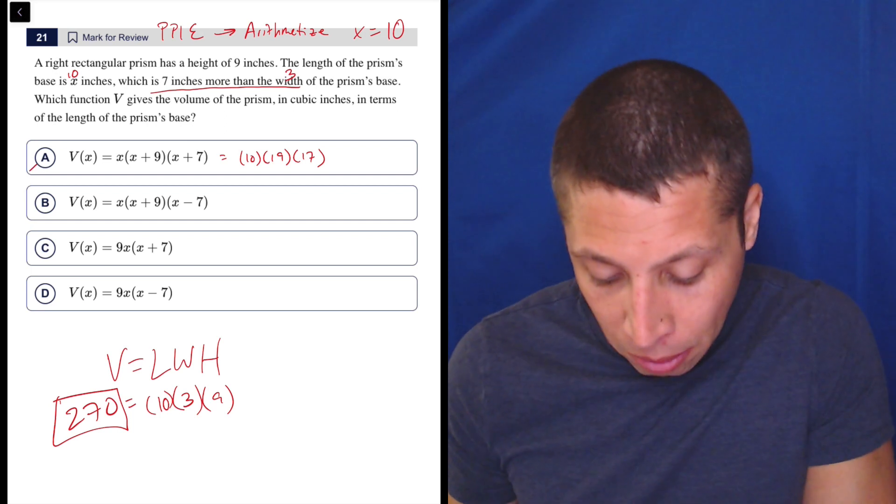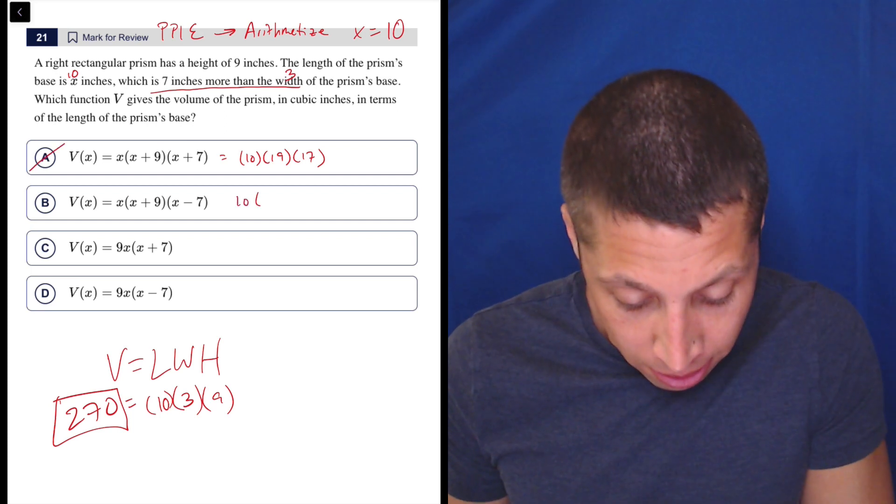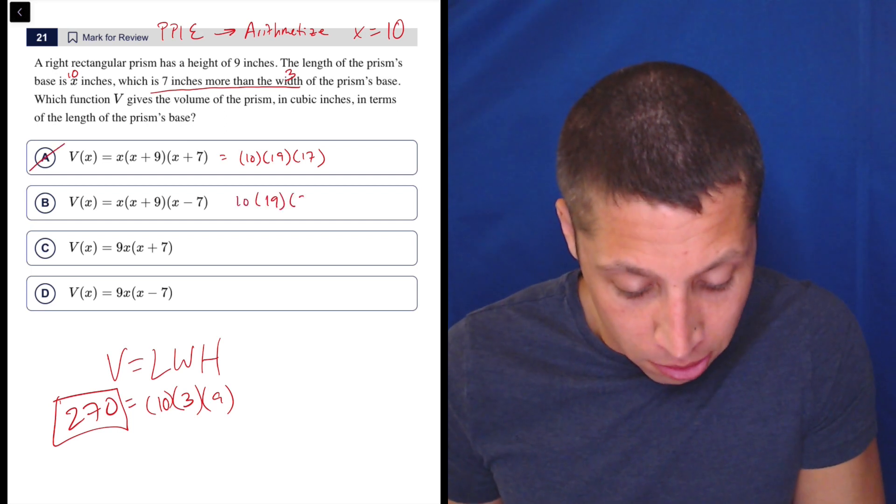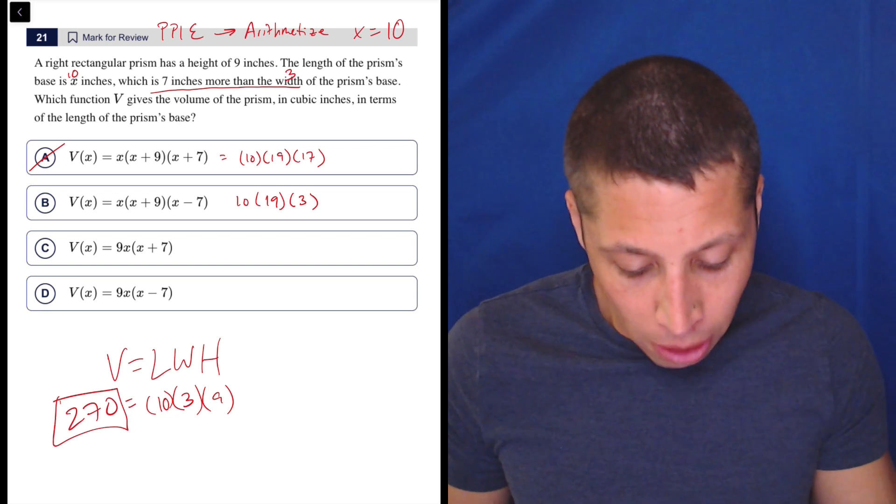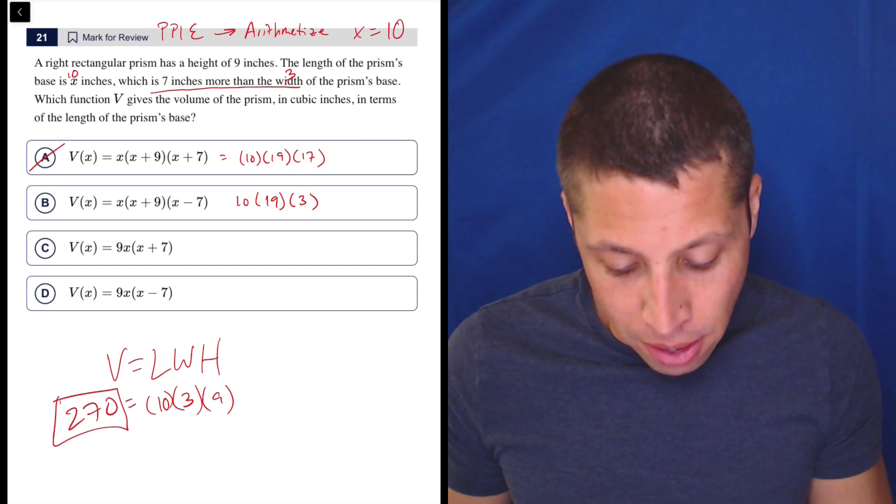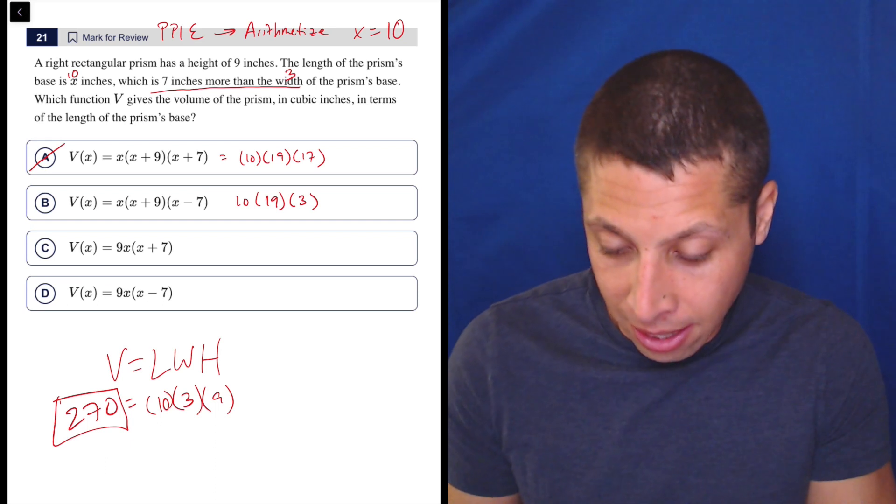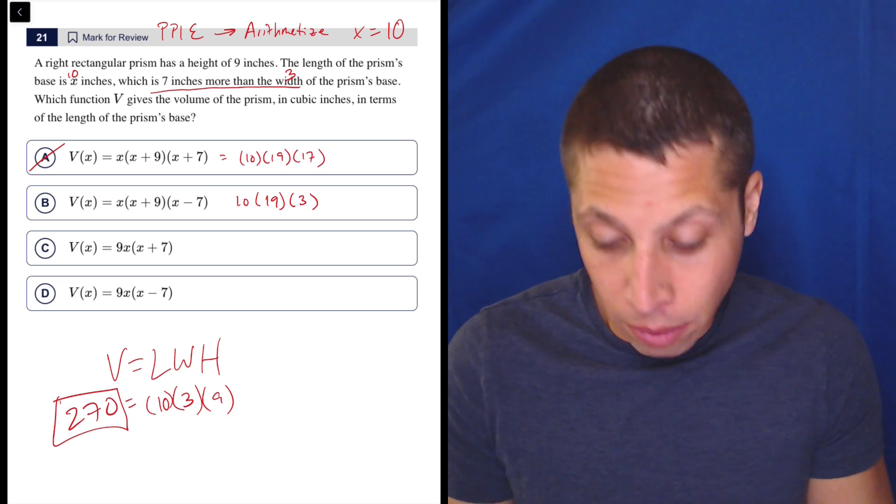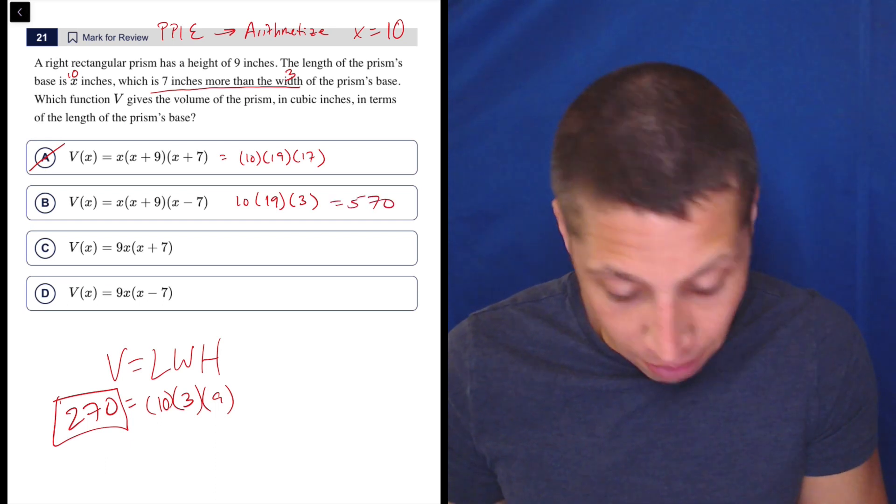So that's not going to be right. And then here we have 10 times 19 times three. Well, that seems closer, right? Because we got the three there. But no, 10 times 19 times three is not what we did originally. This is 570. So that's no good.